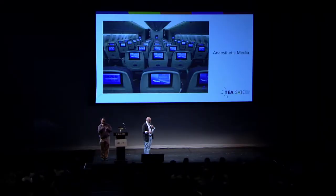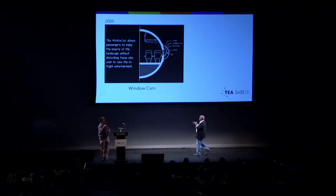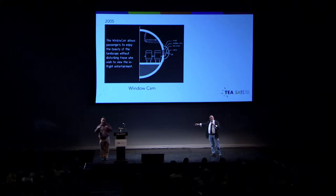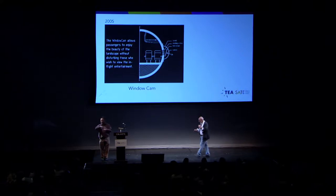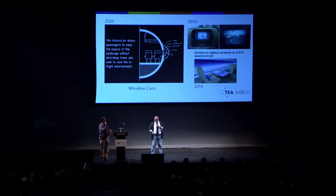My solution was to create the window cam — a little camera that points outside a plexiglass turret mounted to the outside of the plane, with an LCD screen facing the other way so that when I look out the window, I can look at the landscape without disturbing the passengers next to me who want to watch the Jim Carrey movie. Ironically, five years later I was on a flight to Hong Kong, and there it is. So somebody was listening in on that room.